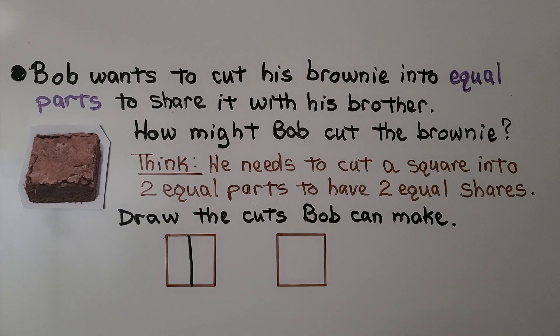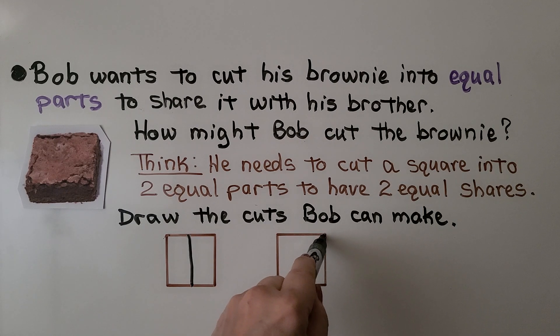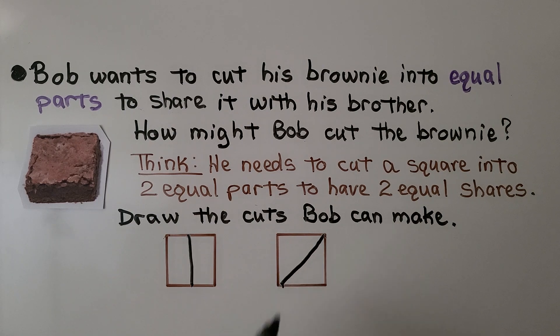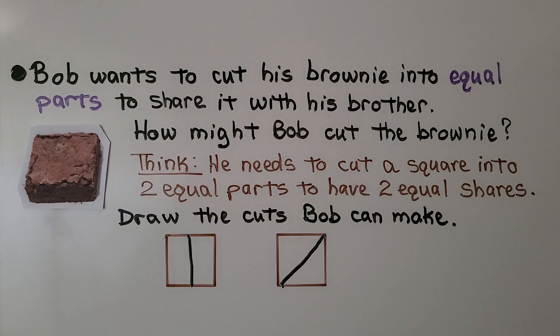Another way we could do it is with a diagonal line going from this vertex to this vertex. We would have two triangles and it would still be equal shares.